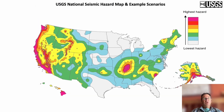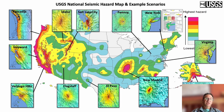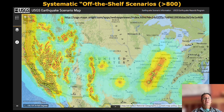Another thing we can do with these probabilistic maps is extract individual faults and make scenarios. These scenarios are extremely popular for exercises and planning drills. We've generated losses for each of these earthquakes and provided them for planning purposes, and they've become so popular that we've developed over 800 scenarios archived for people to examine the impact of those earthquakes.